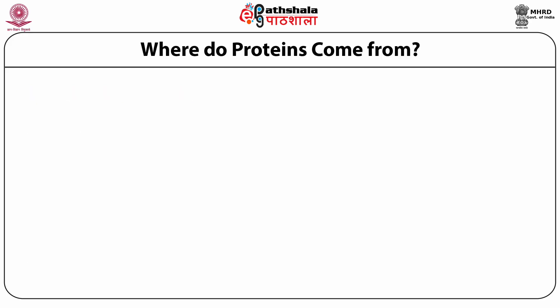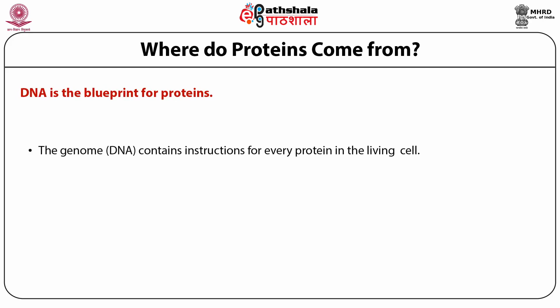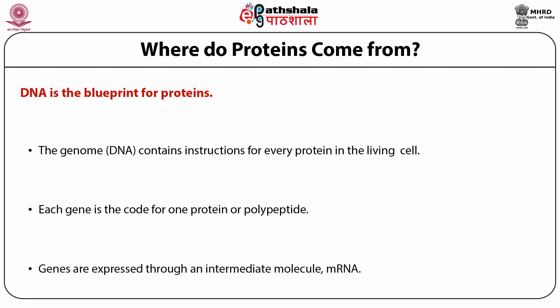Where do proteins come from? DNA is the blueprint of proteins. The genome contains instructions for every protein in the living cell. Each gene codes for one protein or one polypeptide chain. Genes are expressed through an intermediate molecule called mRNA in the process of transcription, which eventually gets translated outside the nucleus at the ribosomes where proteins are synthesized.